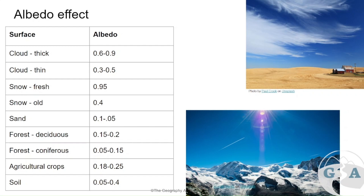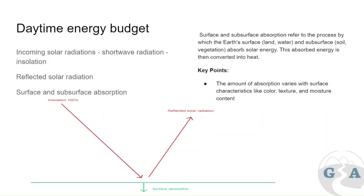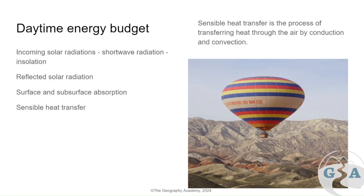So far we have incoming solar radiation and reflected solar radiation with albedo. The third component is surface and subsurface absorption — this is the heat going into the ground. The ground heats up, and different surfaces absorb it differently. Bare rock, for example, absorbs heat very well during the day and transfers it downward, where it is stored and can be re-released later.